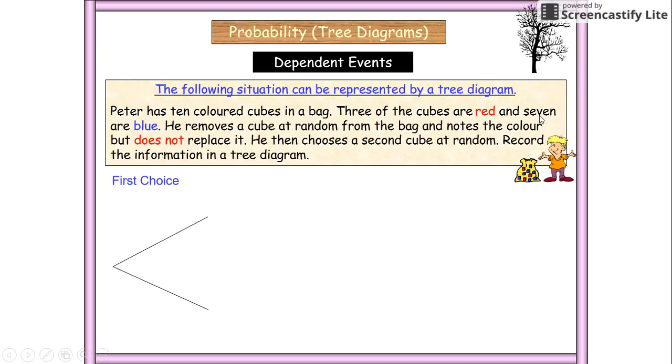So you've got your first choice and you know the choices are between red and blue. And we know that we're going to have a three out of 10 and a seven out of 10. Now, our second choice, we're going to go straight into putting our red and our blue and our red and our blue.